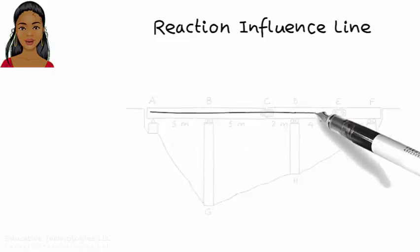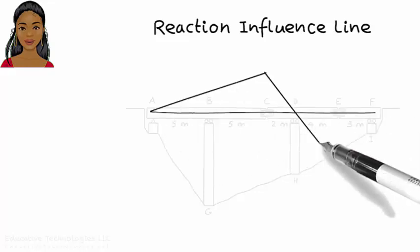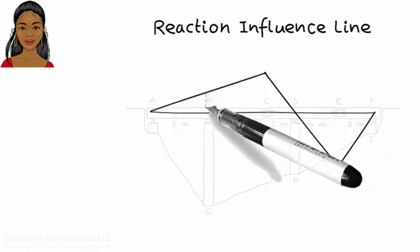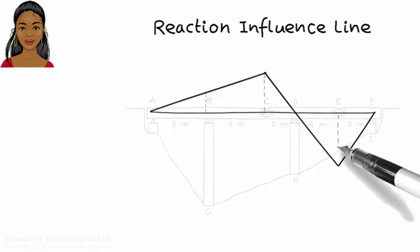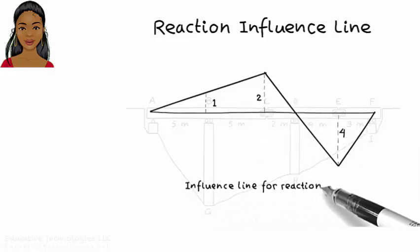Here is the influence line for reaction at B. Before I explain how the diagram is drawn, let me explain how to interpret it. The diagram shows the values for reaction at B as a unit load moves across the bridge.